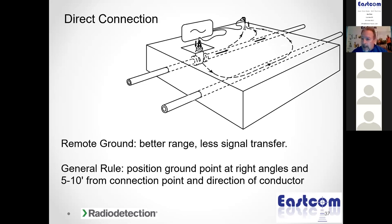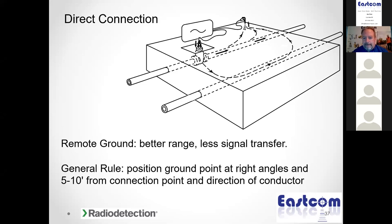Moisture is important because in dry times of year we can use it to improve our ground. Whether you're using a small ground spike or a large ground rod, use water to improve that signal. If you don't have water, you can use coffee, orange juice, soda — any liquid available — to soak the soil where your ground spike goes. You can also use existing grounds like a guard rail, chain link fence, guy wire, or stop sign — those can all provide good grounds.